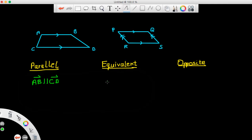So if you consider the diagram on your right, vector PQ is equivalent to vector RS, and similarly vector QS is equivalent to vector PR.